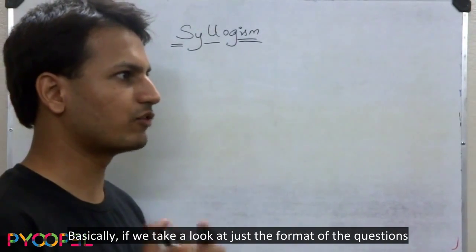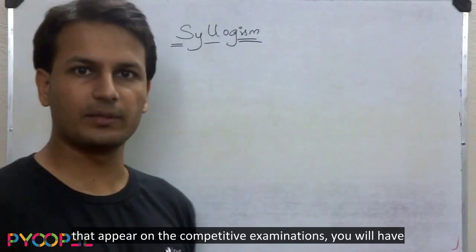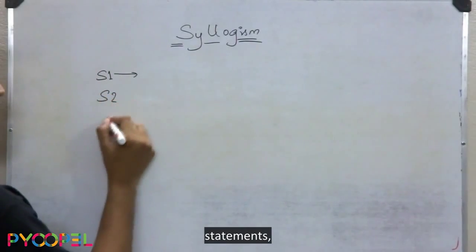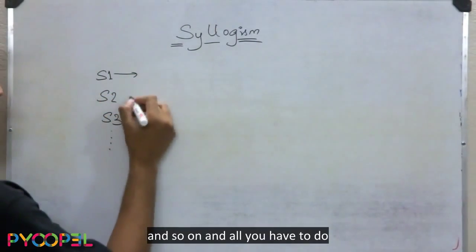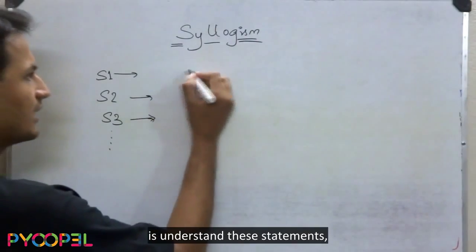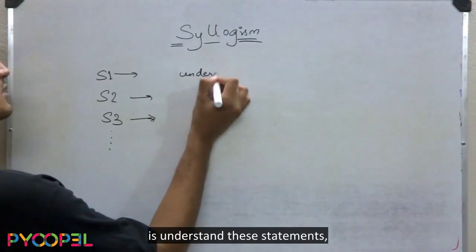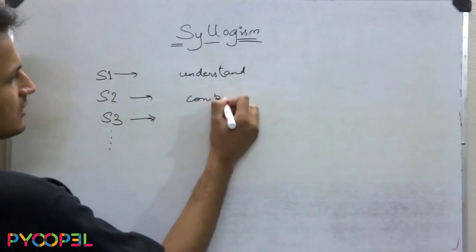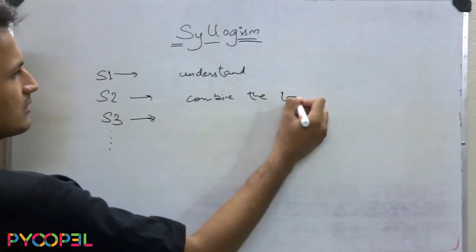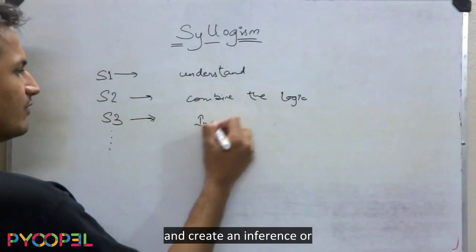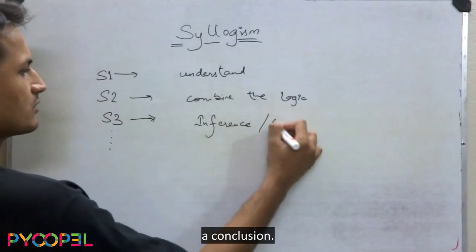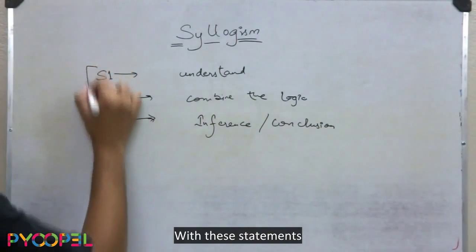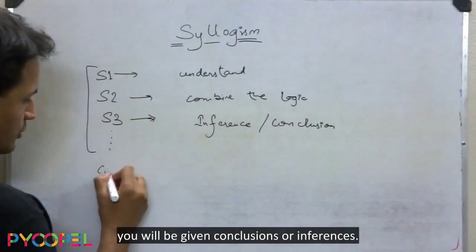Basically, if we take a look at the format of questions that appear on competitive examinations, you will have statements — statement one, statement two, and so on. All you have to do is understand these statements, combine the logic, and create an inference or a conclusion. Along with these statements, you will be given conclusions or inferences.